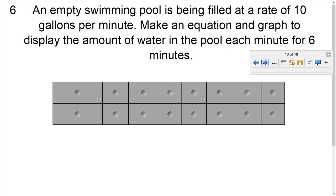Here's an example. An empty swimming pool is being filled at a rate of 10 gallons per minute. Make an equation and graph to display the amount of water in the pool each minute for six minutes. The first thing we should do is find out what's the number of minutes we're dealing with. And it's going to correspond to a number of gallons. So, we'll call the number of minutes x and we'll call the number of gallons y.